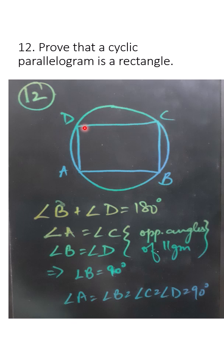So we draw a parallelogram ABCD that is cyclic. This has 4 points on the circle. We need to prove that it is a rectangle. So angle B plus angle D will be 180 degrees, because in a cyclic quadrilateral the opposite angles are 180 degrees.